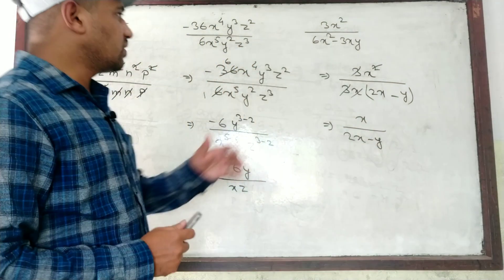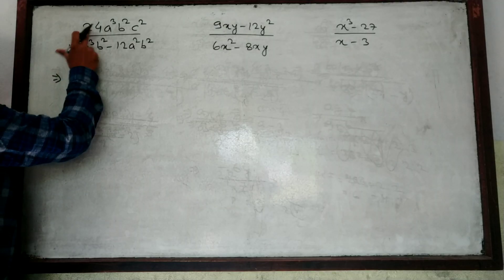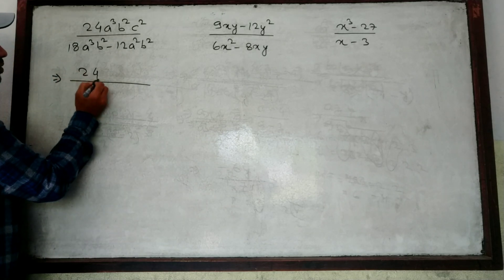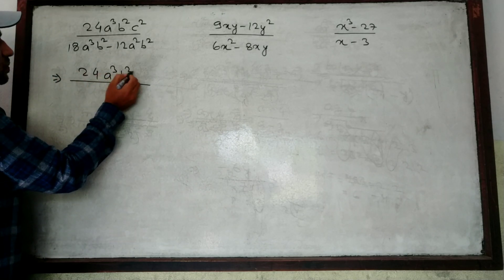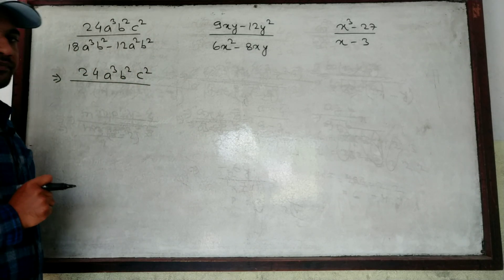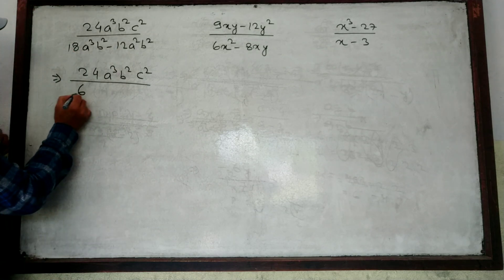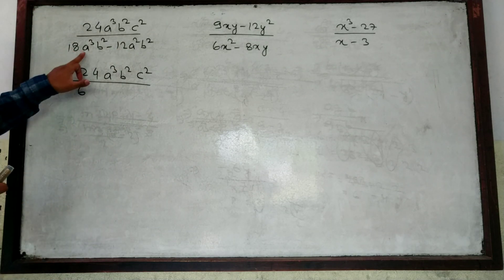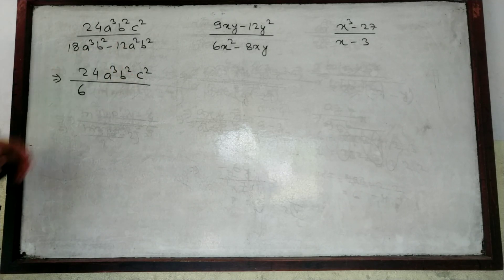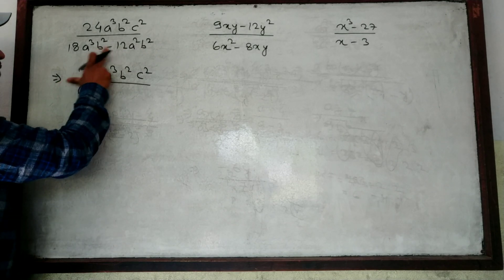Now the remaining three questions. The next one is 24A³B²C² divided by (18A³B² minus 12A²B²). I will teach you the direct method. For 18 and 12, what is the common? 6 is common because 6 times 2 is 12 and 6 times 3 is 18. Now look at the variables: here is A³ and here is A². The smallest power is common, so we take A².